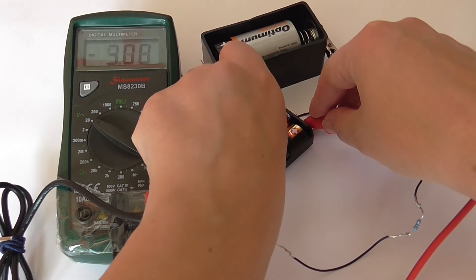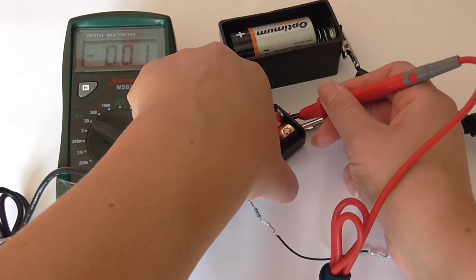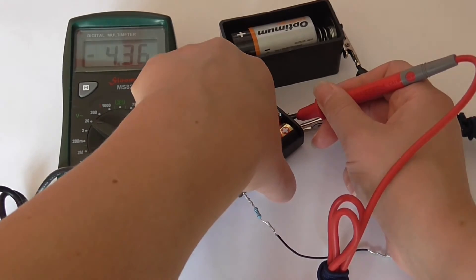Now taking the potential difference across the cells is a bit more awkward. That's 4.36 volts.